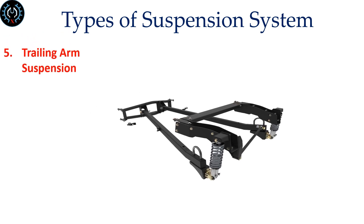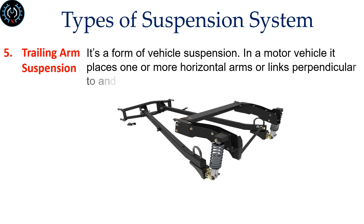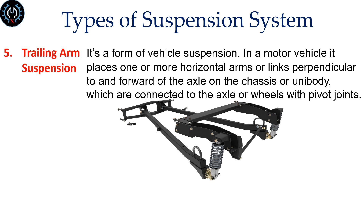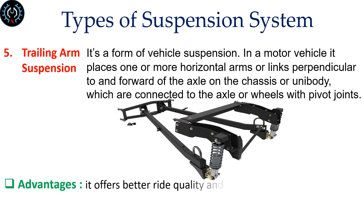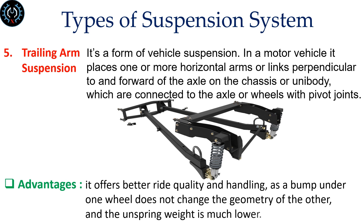Trailing Arm Suspension is a form of vehicle suspension that places one or more horizontal arms or links perpendicular to and forward of the axle on the chassis or unibody, which are connected to the axle or wheels with pivot joints. It offers better ride quality and handling, as a bump under one wheel does not change the geometry of the other, and the unsprung weight is much lower.